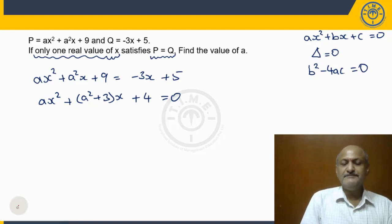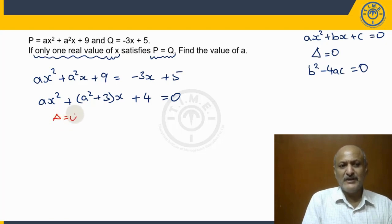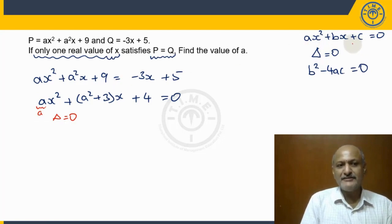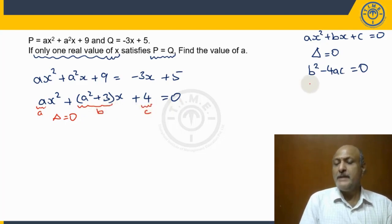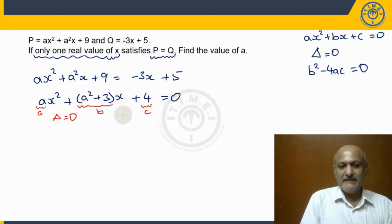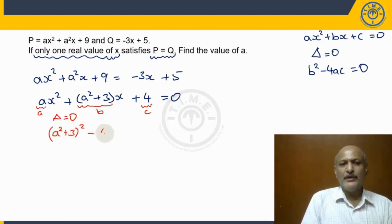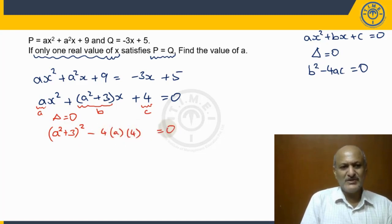Now, what is the discriminant here? Comparing with the general quadratic equation, the coefficient of x² is a, the coefficient of x is b = (a² + 3), and the constant is c = 4. We are looking for b² - 4ac = 0, so our condition becomes: (a² + 3)² - 4 · a · 4 = 0.